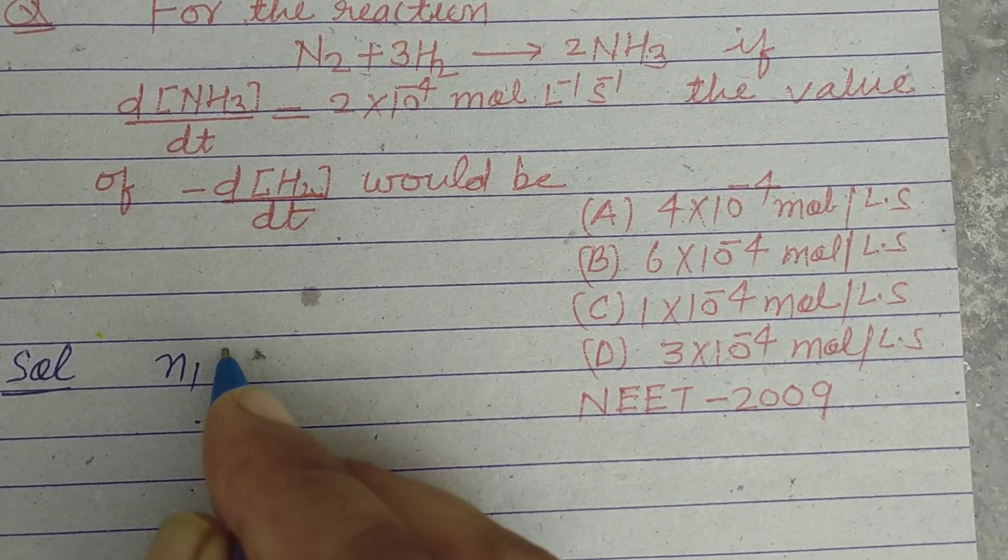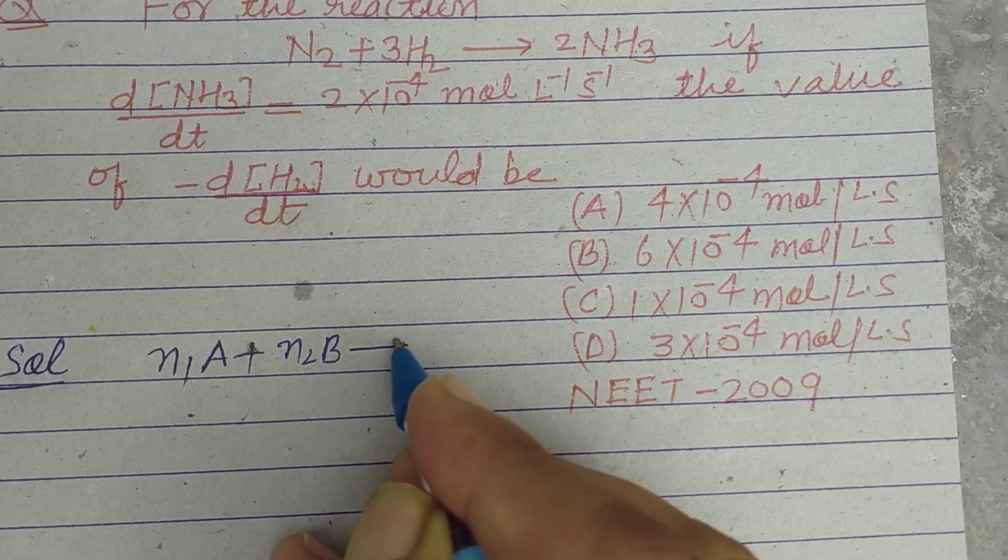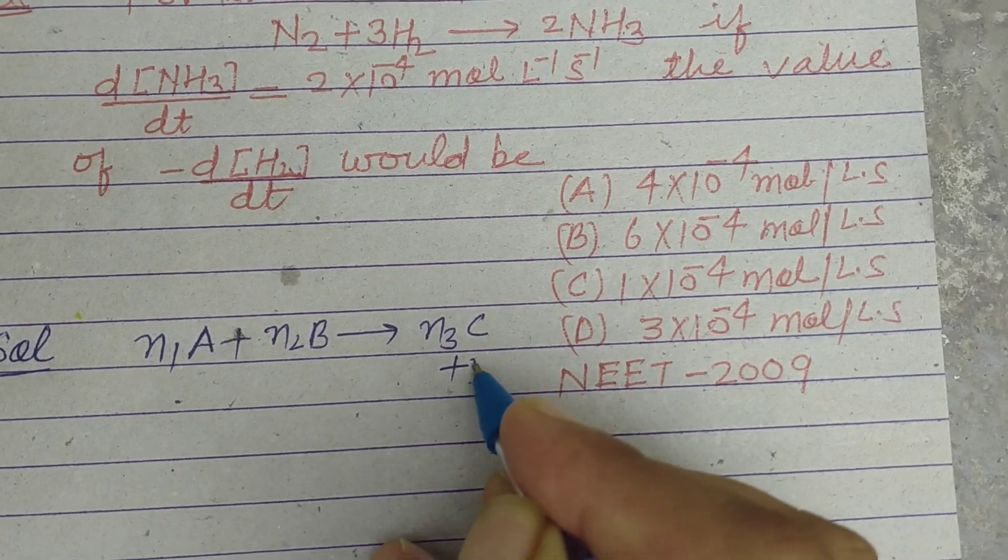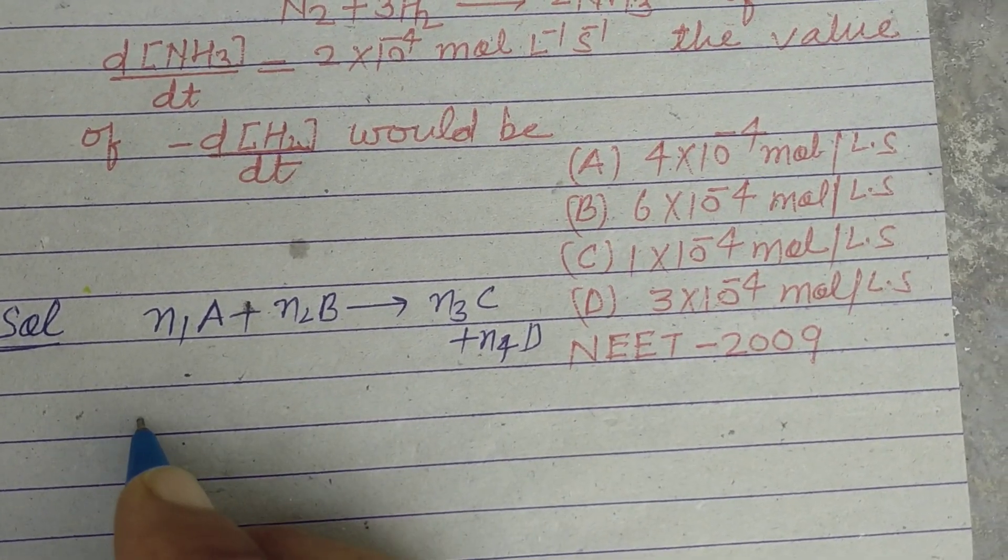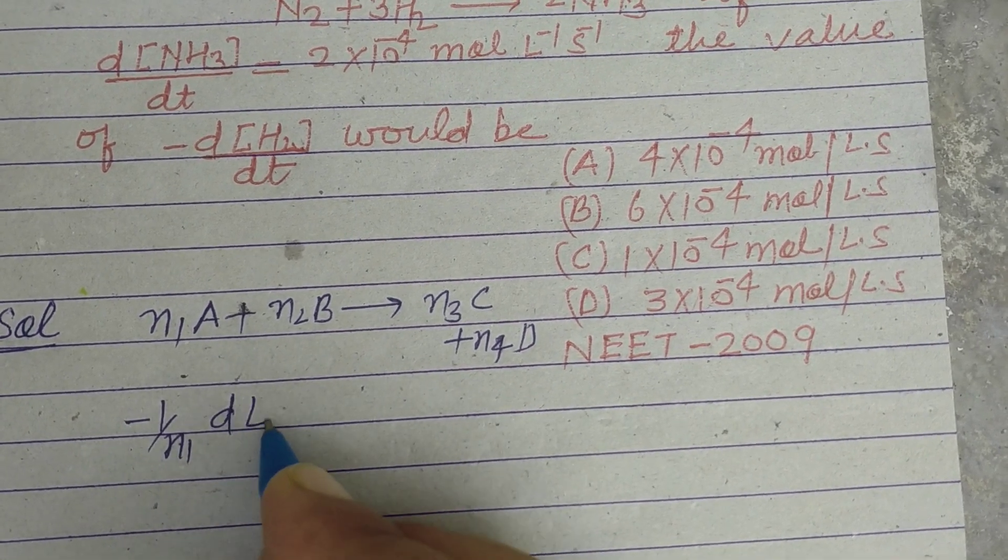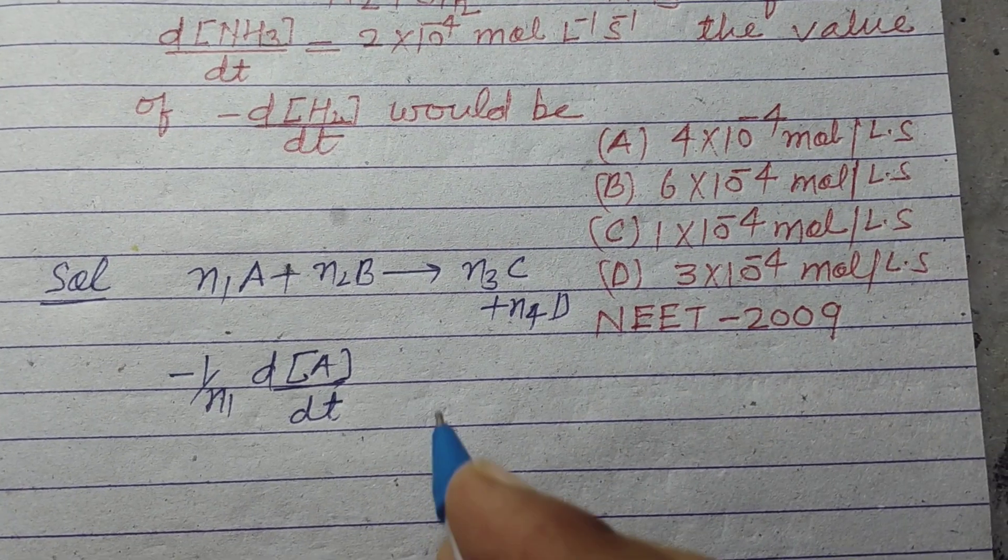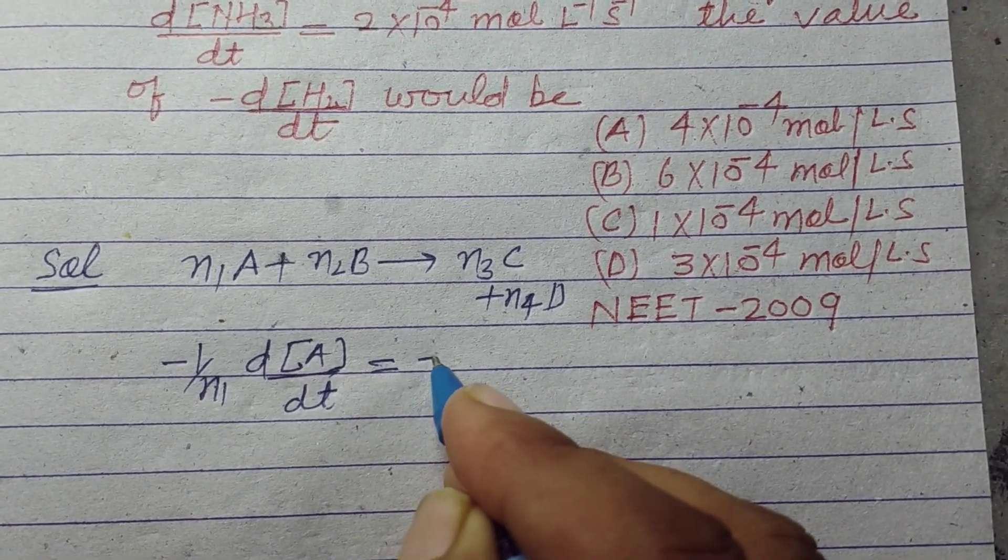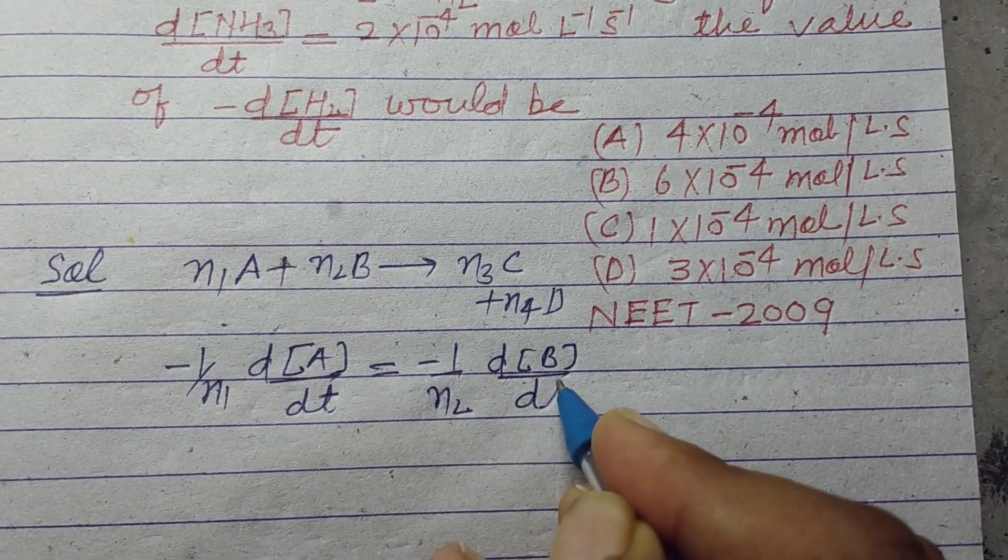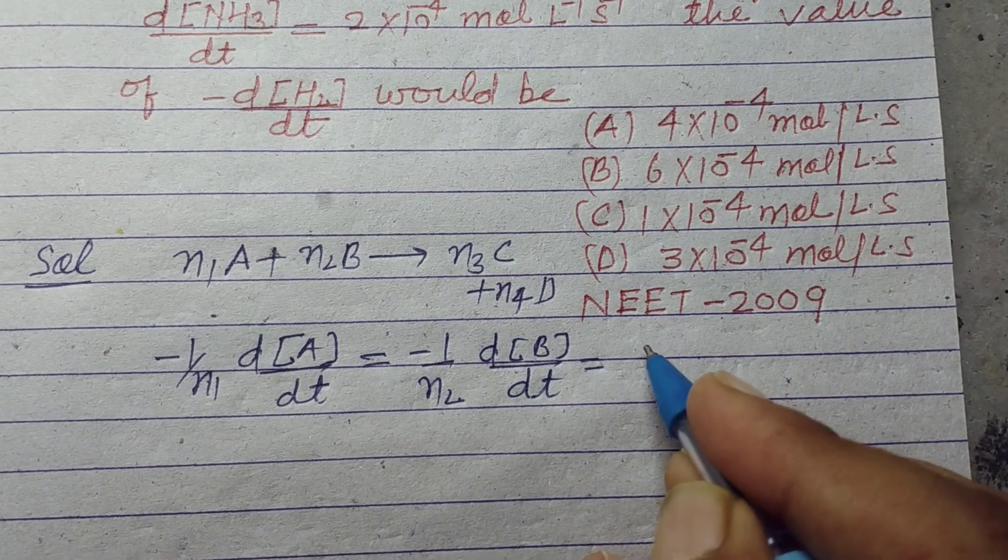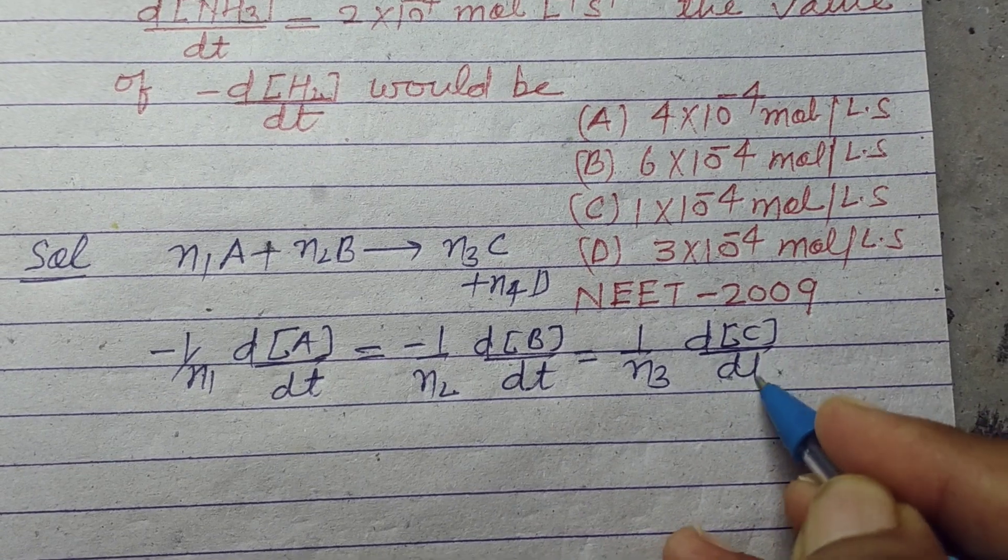in chemical kinetics, n1A + n2B gives rise to n3C + n4D, then the rate of reaction is -1/n1 dA/dt is equal to -1/n2 dB/dt is equal to 1/n3 dC/dt equal to 1/n4 dD/dt.